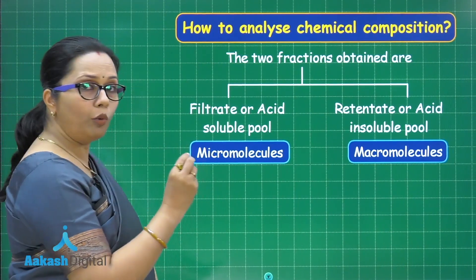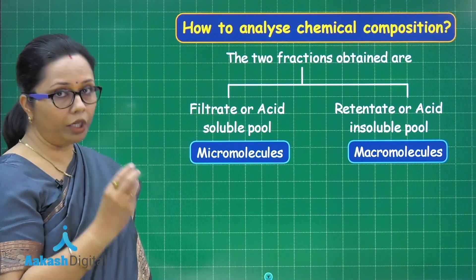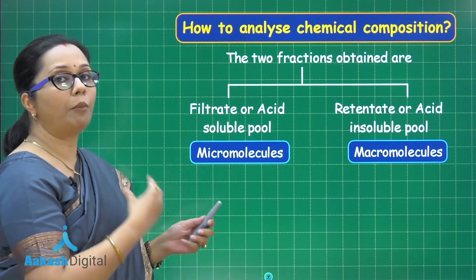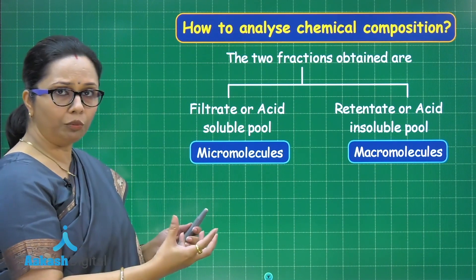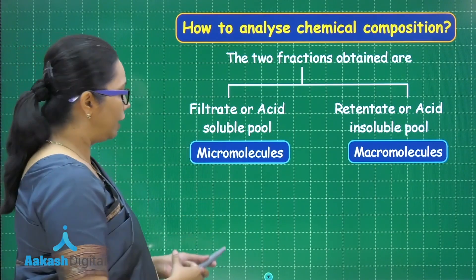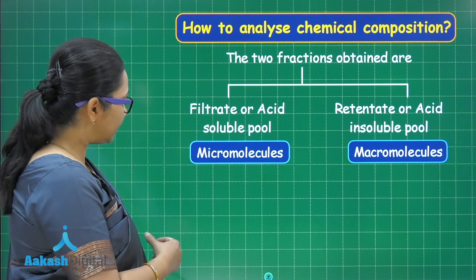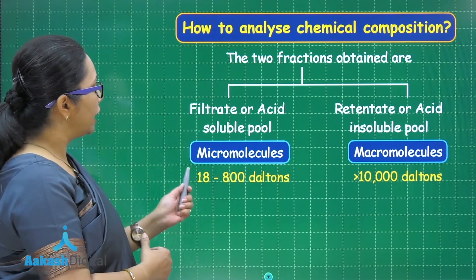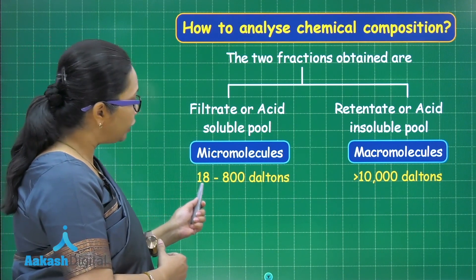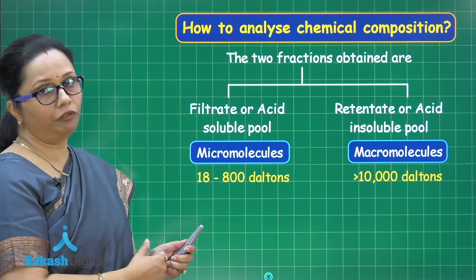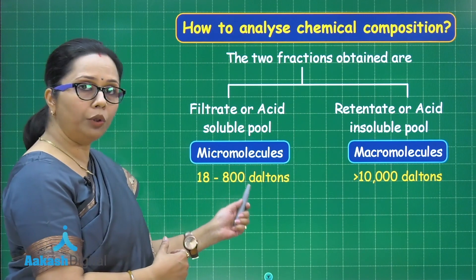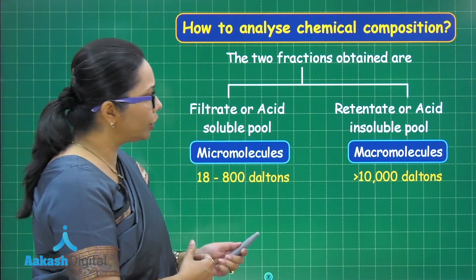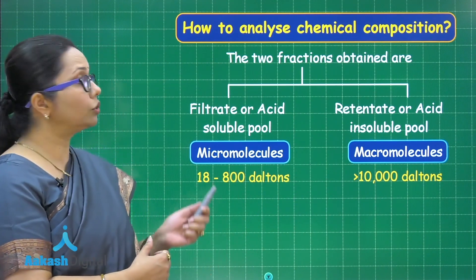Micro molecules are very small with very low molecular weight, while macromolecules are polymers — formed when many micro molecules combine together to form a large molecule. The weight range of micro molecules is 18 to 800 Daltons, where Daltons is a unit equivalent to atomic mass unit, while macromolecules are 10,000 Daltons or above.